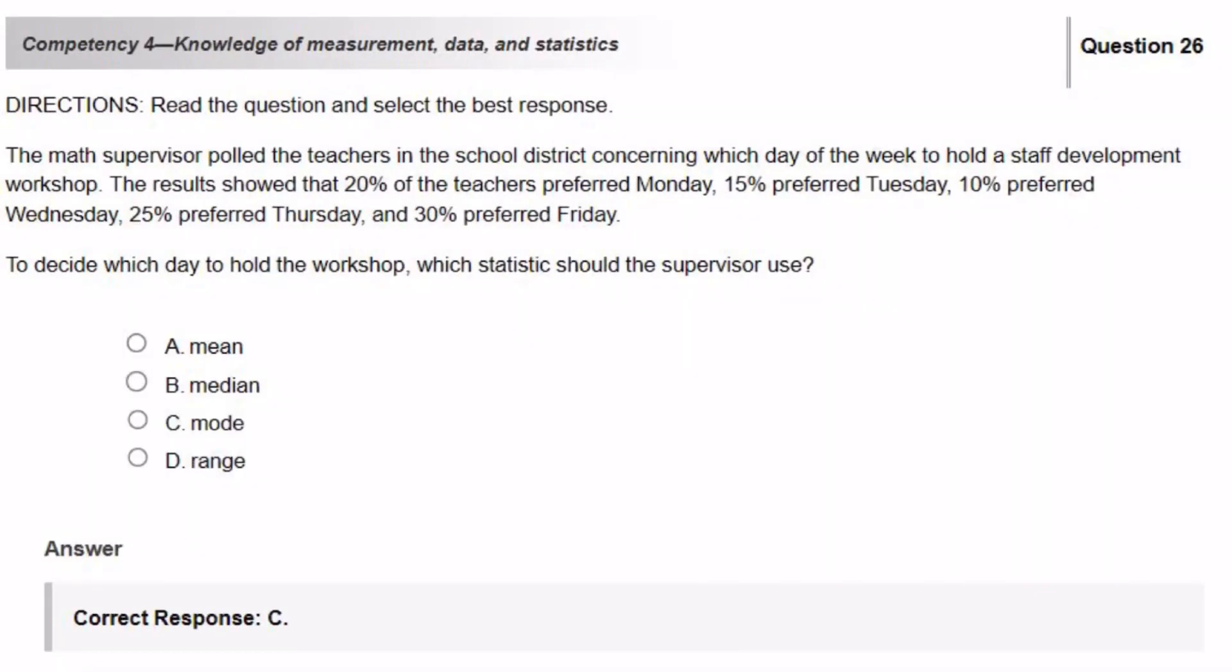The math supervisor polled the teachers in the school district concerning which day of the week to hold a staff development workshop. The results show that 20% of the teachers preferred Monday, 15% preferred Tuesday, 10% preferred Wednesday, 25% preferred Thursday, and 30% preferred Friday. To decide which day to hold the workshop, which statistic should the supervisor use? So in order to answer this question, you would need to know the difference between mean, median, mode, and range.